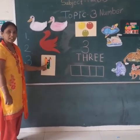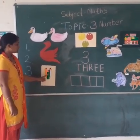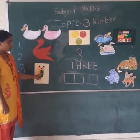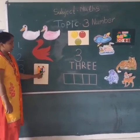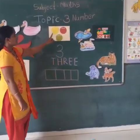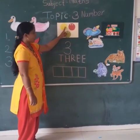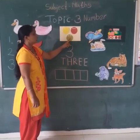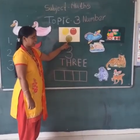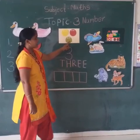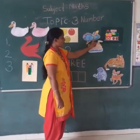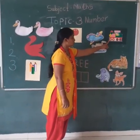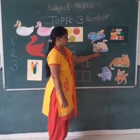How many pencils? 1, 2, 3 pencils. Then next, how many circles? 1, 2, 3 — 3 circles. Then how many markers? 1, 2, 3 markers.